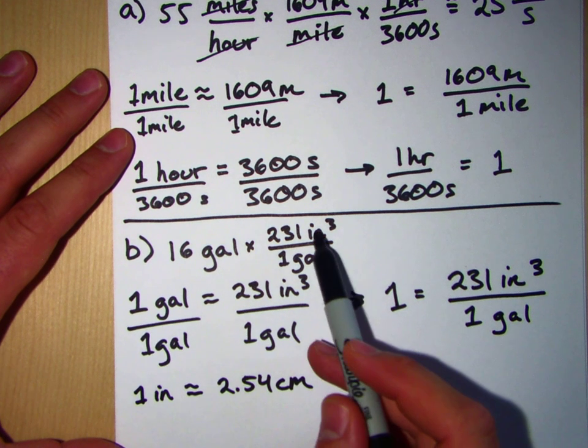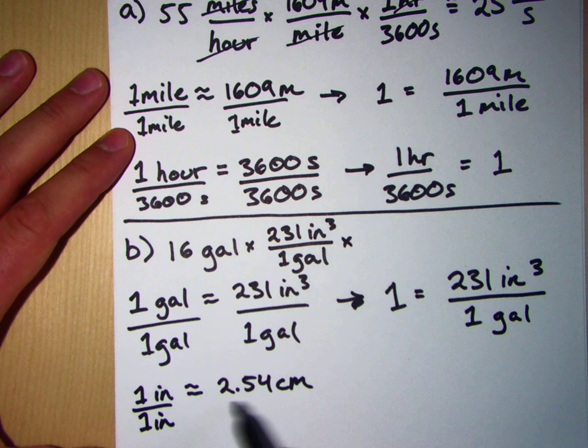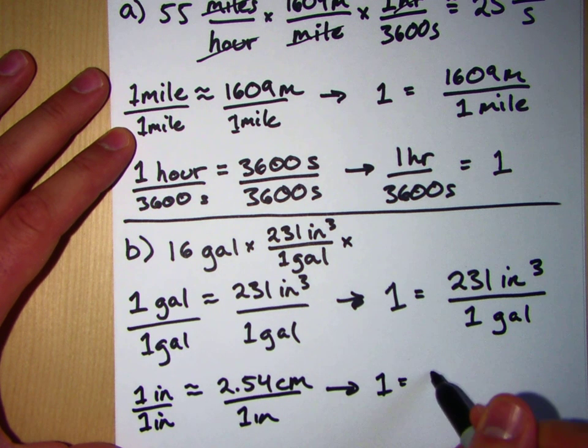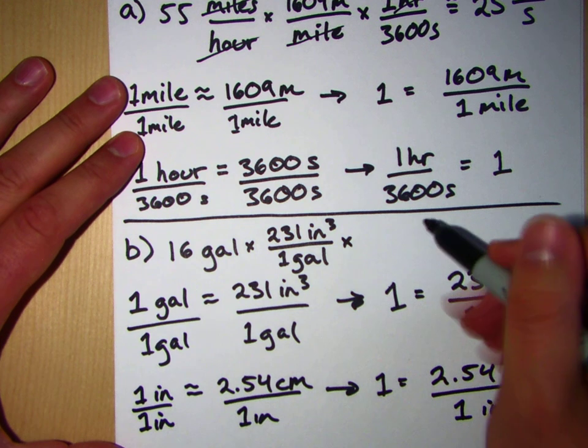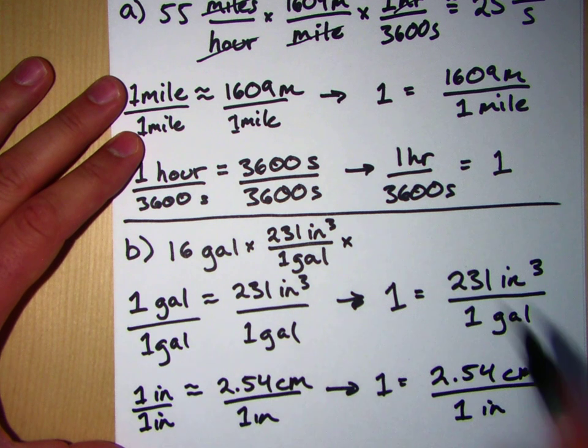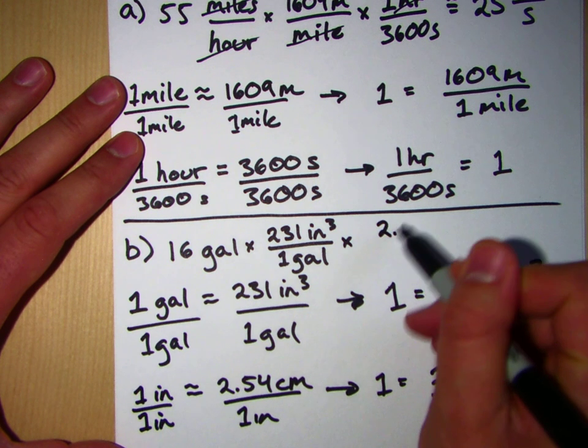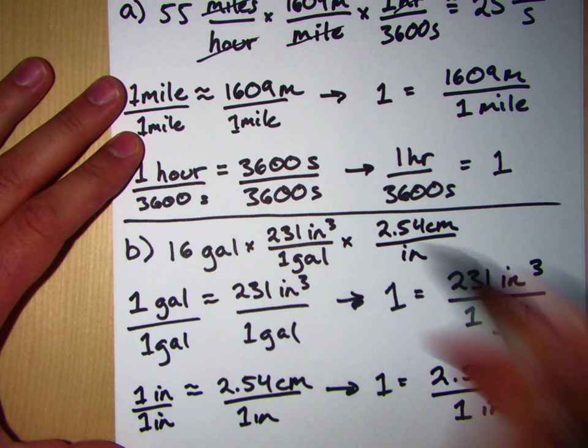One inch is about equal to 2.54 centimeters. So in this case, we have inches upstairs, so we're going to want inches downstairs. So we're going to divide by inches, divide by one inch. And so what we're left with is one is equal to 2.54 centimeters for every one inch. Well, we could just do that. So we're going to multiply by one, but we're not going to multiply by just this right here. So let's put that in. 2.54 centimeters per inch.